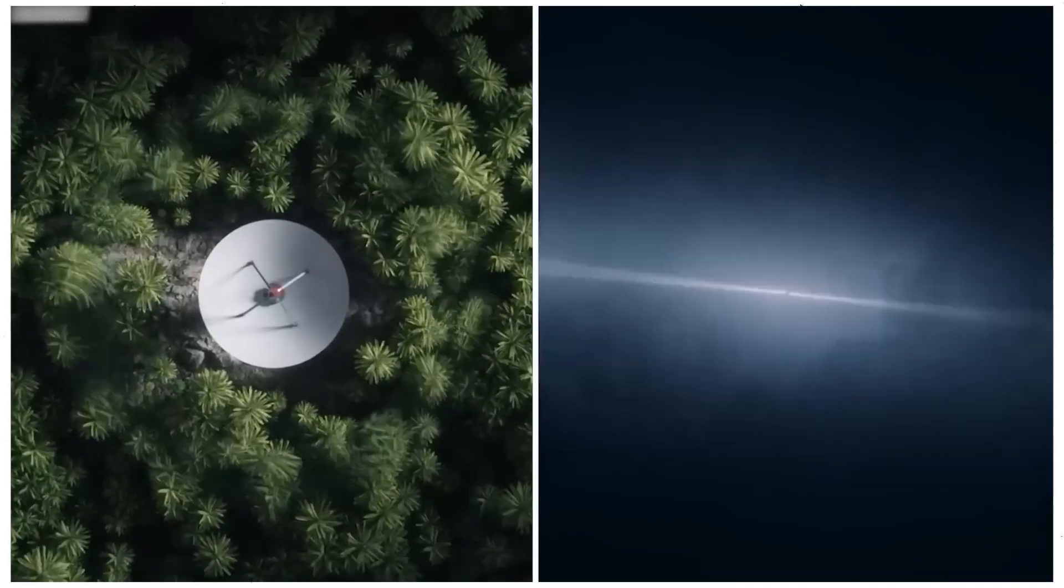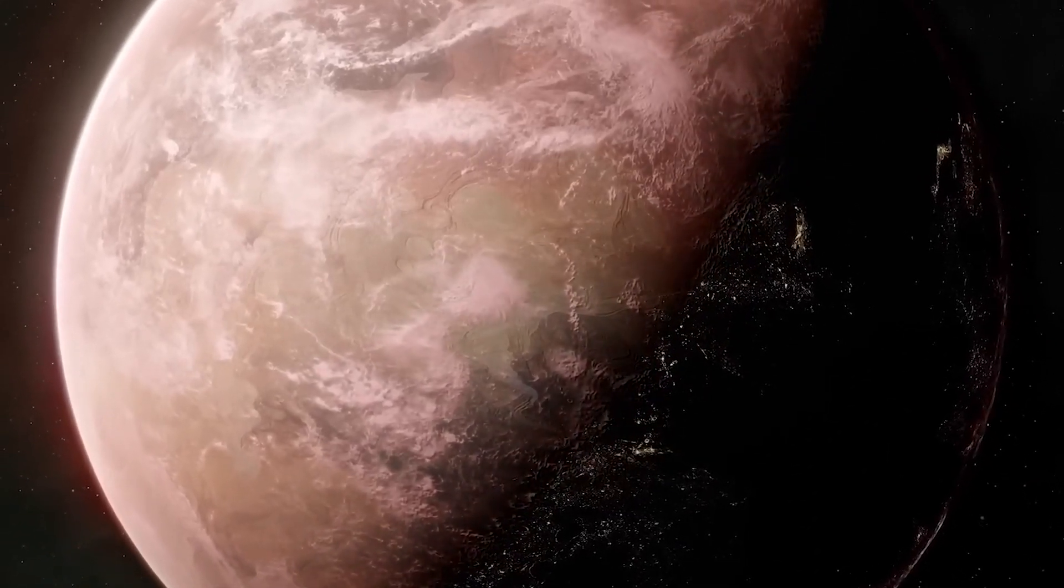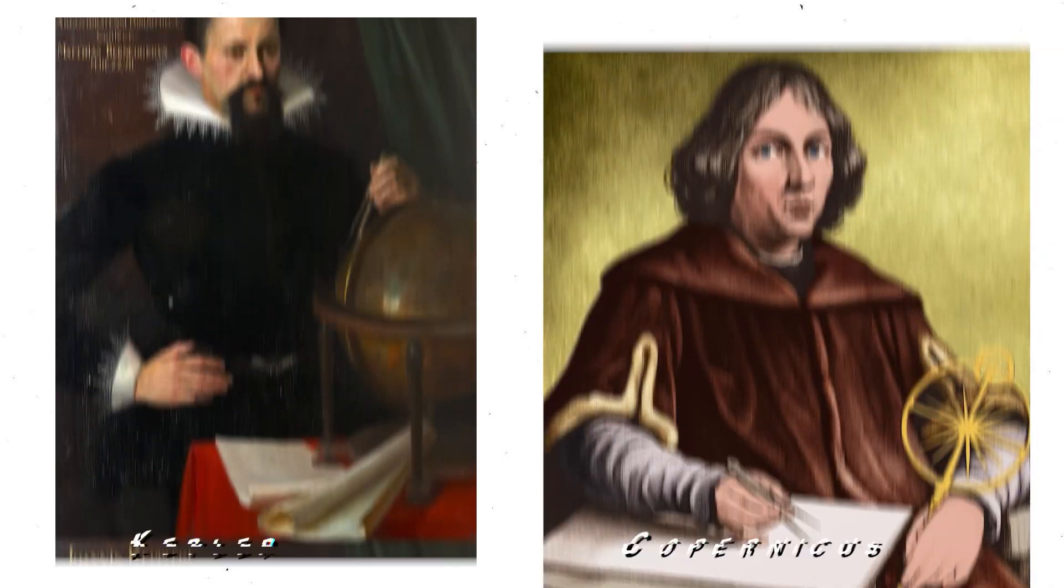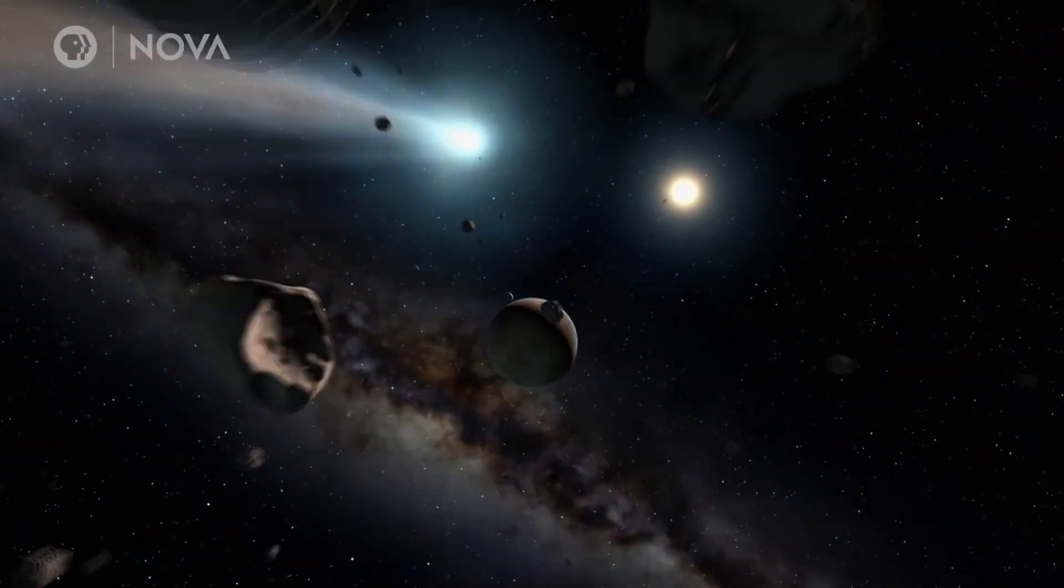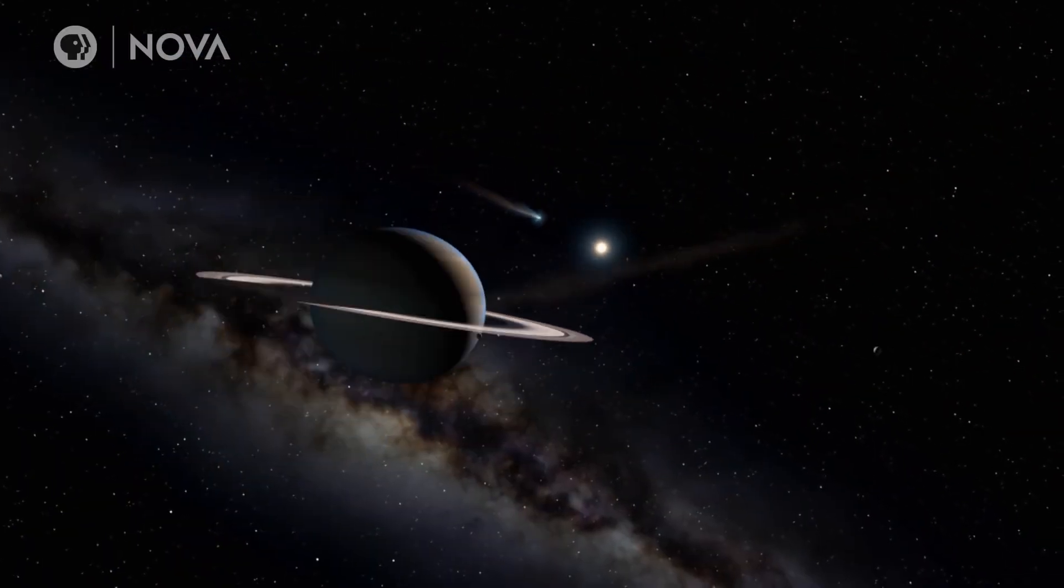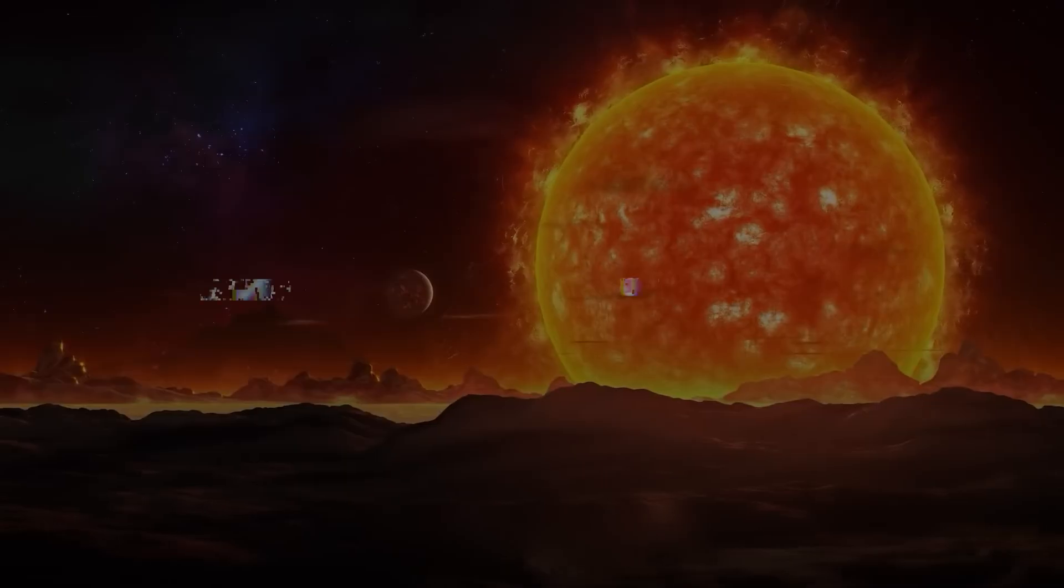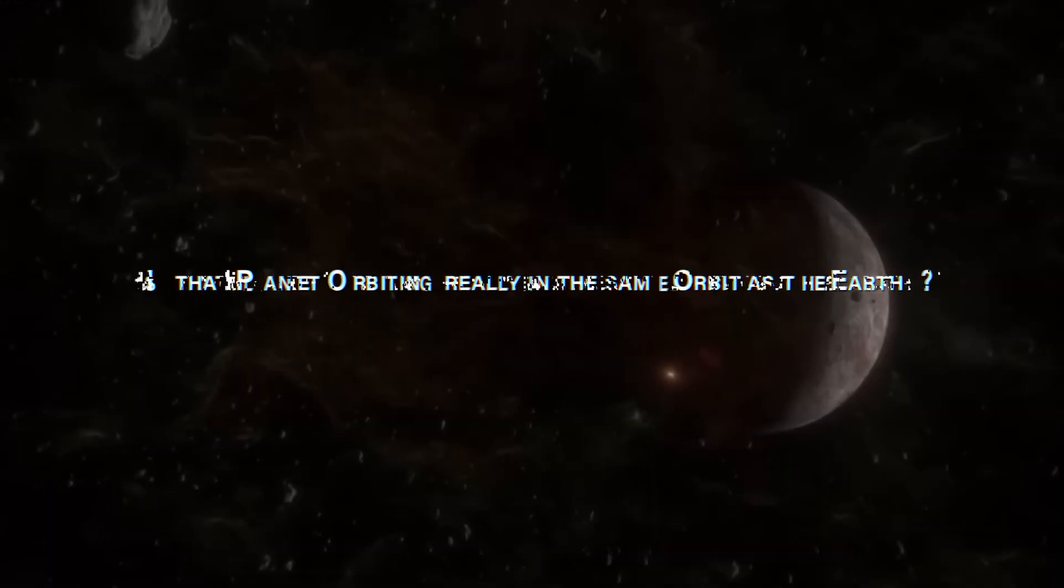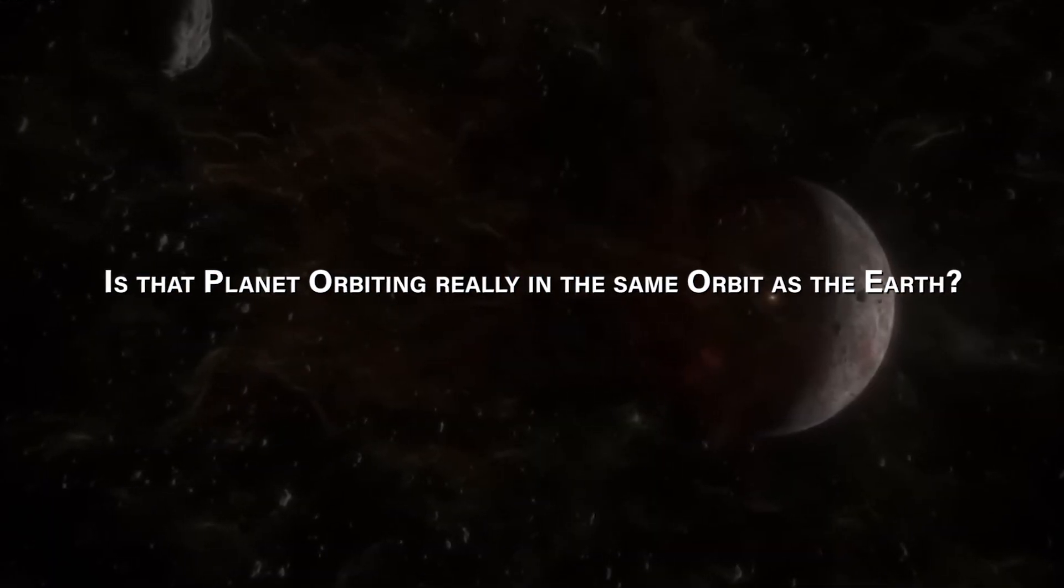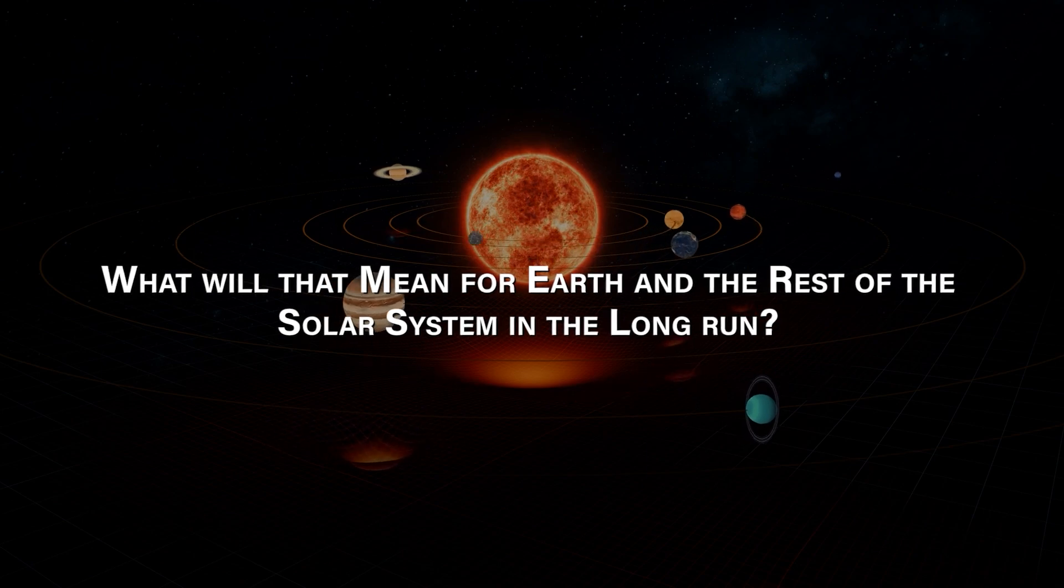As time went on, scientific understanding evolved, and the idea of Antichthon shifted from mythology to early astronomical theories. Noteworthy astronomers like Kepler and Copernicus explored the possibility of a hidden planet in our solar system, proposing that it could explain certain gravitational anomalies. Is there really a planet behind the sun that has not been found? Is that planet orbiting really in the same orbit as the Earth? What will that mean for Earth and the rest of the solar system in the long run?